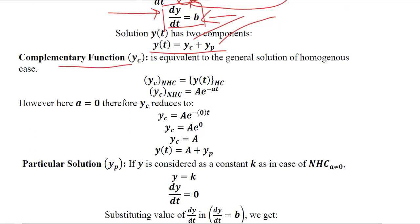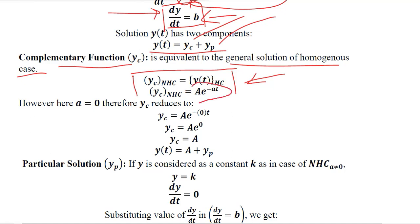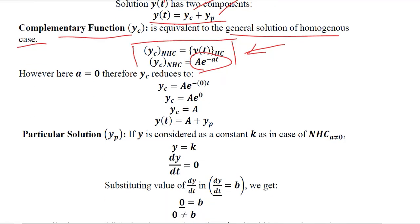The complementary function comes first and it is equivalent to the general solution of the homogeneous case. This can be understood from the previous video. We put a equal to 0 into the complementary function expression, and the answer reduces to yc equal to A. Now we have the value of yc.